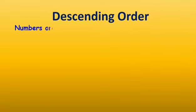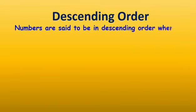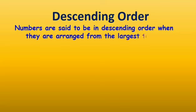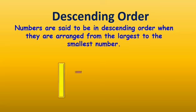Descending Order. Numbers are said to be in descending order when they are arranged from the largest to the smallest number.